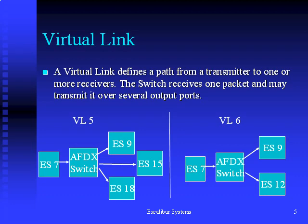The idea of a virtual link is based on the ARINC 429 label, which may be transmitted from a single transmitter to multiple receivers. In AFDX, the switch is responsible for this routing — it may route a single input to several output ports. If multiple input ports need to be transmitted to the same output port, the switch will buffer some of the data.